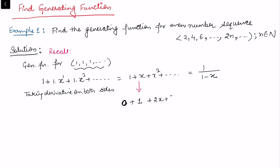The next term becomes 3x², and so on. On the right side we get -1/(1 - x)² times the derivative of the inner term (1 - x), which is -1, giving us 1/(1 - x)².